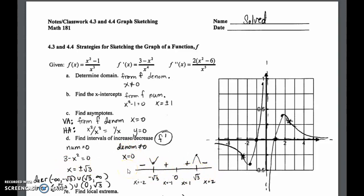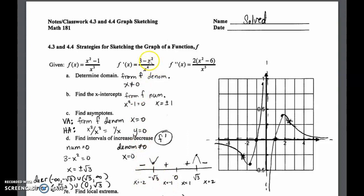We need to test intermediate values to find the signs on those intervals. I picked −2, −1, 1, and 2 — all intermediate to our three critical values: −√3, 0, and √3. Plugging −2 into the derivative gives 3 − (−2)² = 3 − 4 = −1 in the numerator, and (−2)⁴ is positive, so negative divided by positive is negative. For −1: 3 − (−1)² = 3 − 1, which is positive; (−1)⁴ is positive, so positive divided by positive is positive.